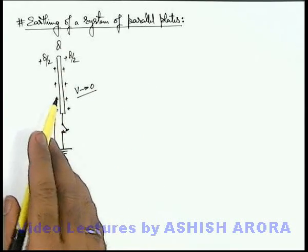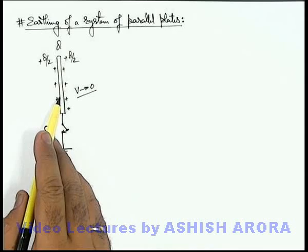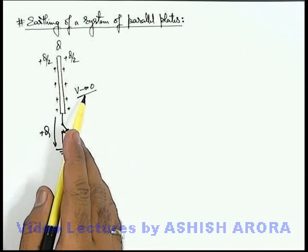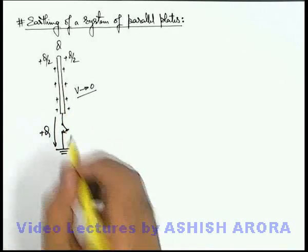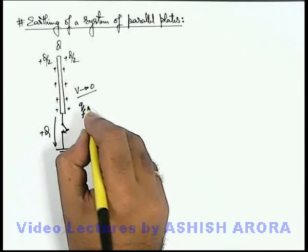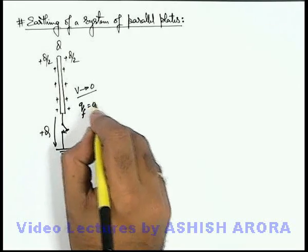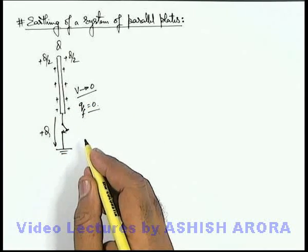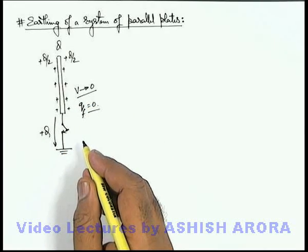So there will not be any charge on the plate and the final potential will become zero. We can say the final charge of this plate will be equal to zero to keep its potential to be zero.